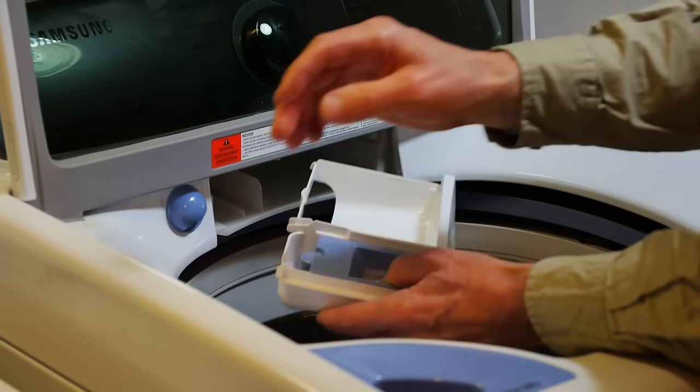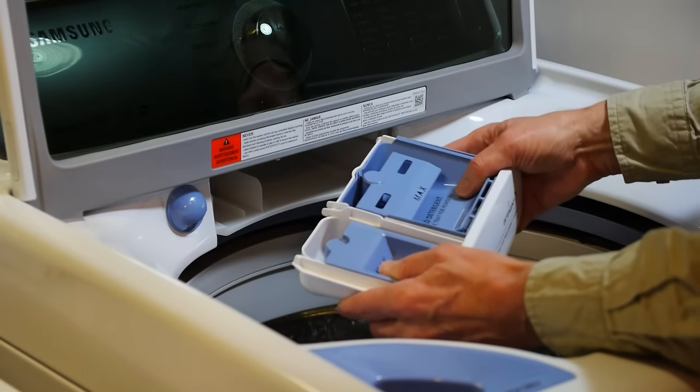Once you do that, then you can see that when you press with your two index fingers, see how it flexes like that? That will make it a little bit easier to pull the drawer out if you take that insert out first.